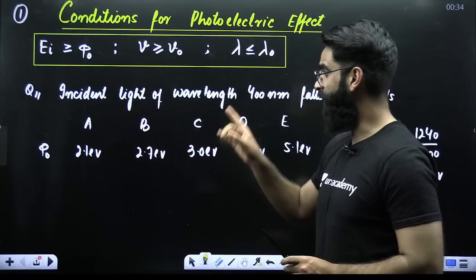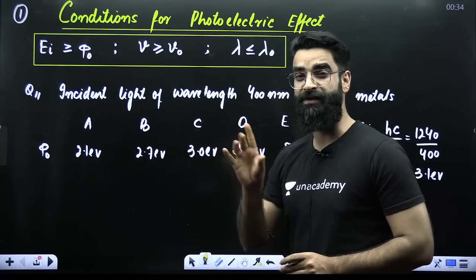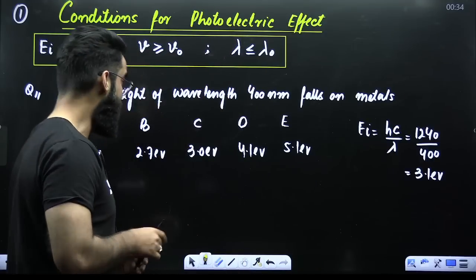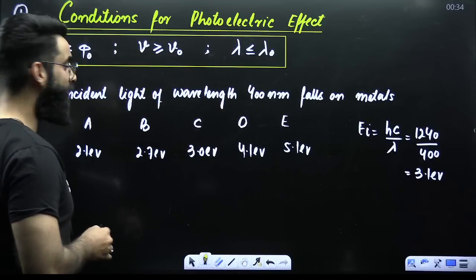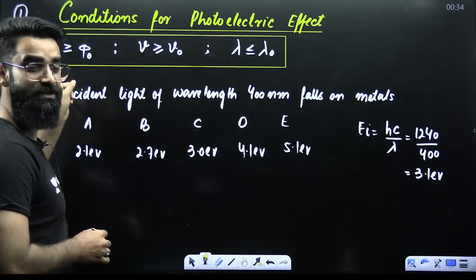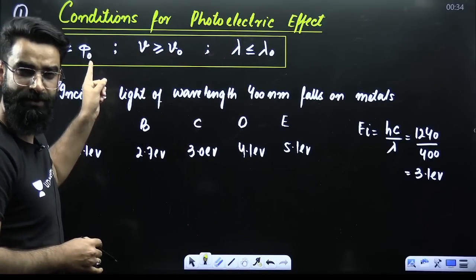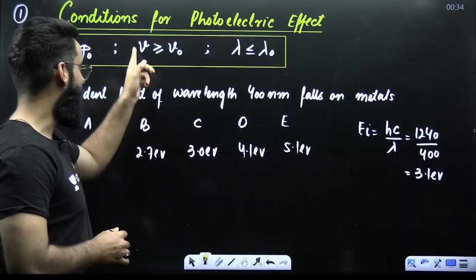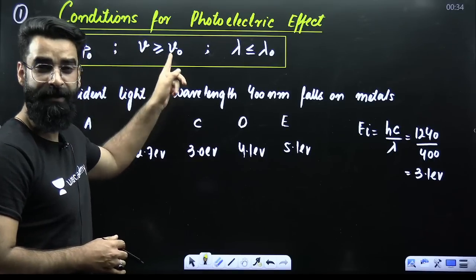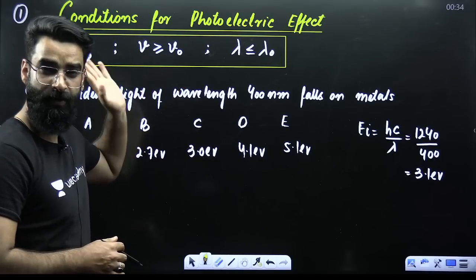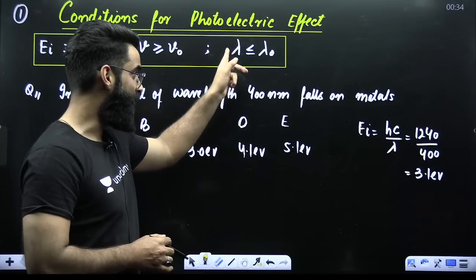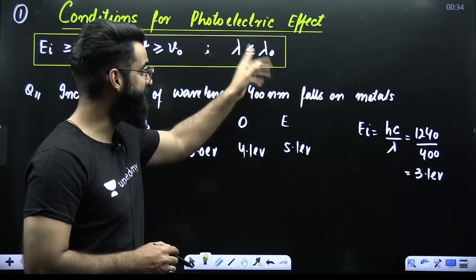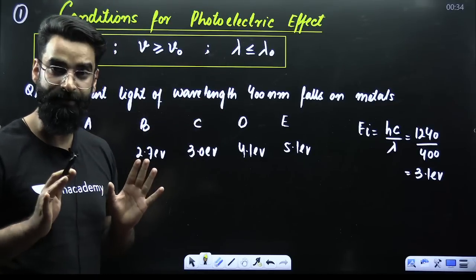First concept I'll be discussing: what is the condition for the photoelectric effect to happen? Remember, the energy of incident radiation should be greater than or equal to the work function, or the frequency of the incident radiation should be greater than or equal to the threshold frequency, or the wavelength of the incident light should be less than or equal to the threshold wavelength.